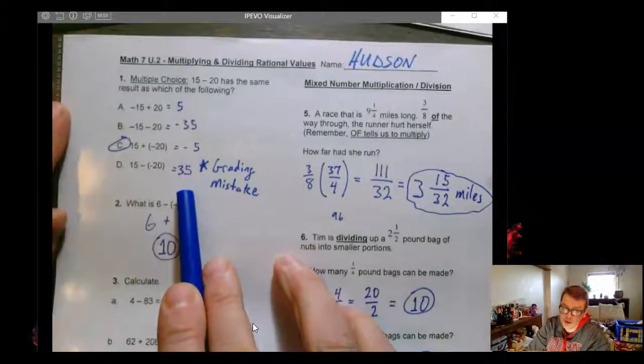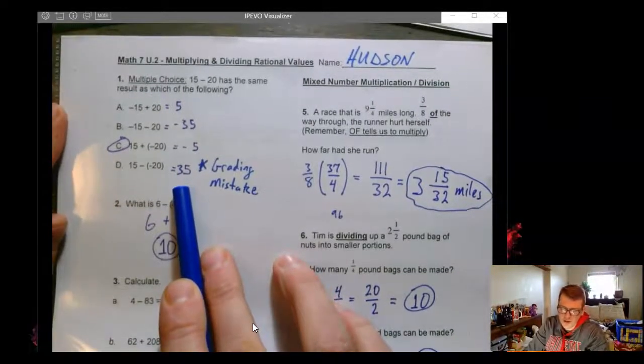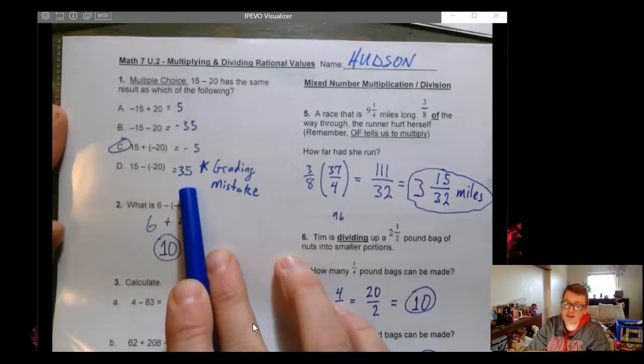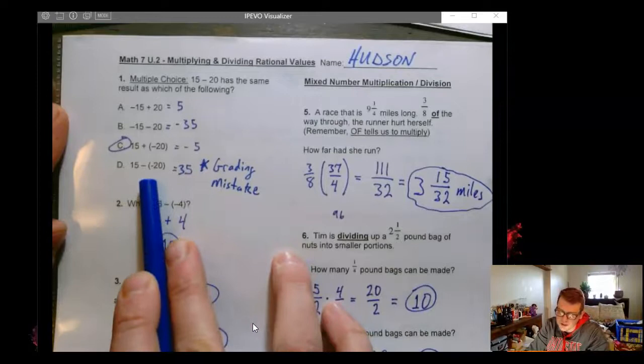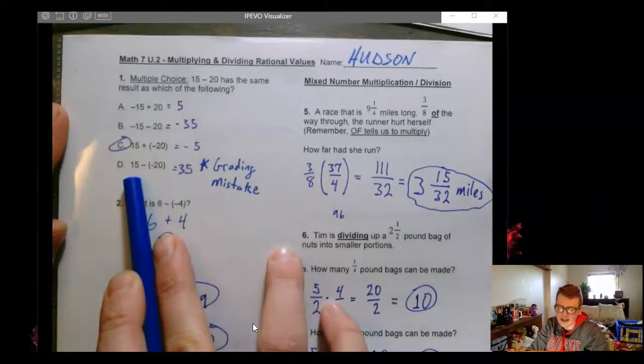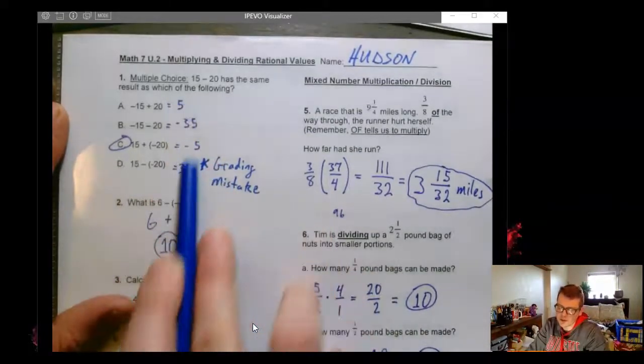A couple of you guys, a few of you guys, probably I marked 35 wrong and it is correct. In my brain, really quickly, I don't know why I switched this to addition, but then thought that the 15 was negative. So as you can see, in purple, when I first went through this,